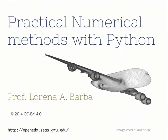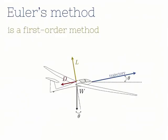Welcome to Practical Numerical Methods with Python and our first screencast, where we cover a little bit of theory to go along with the practical part in the IPython notebooks. In this first screencast we're going to discuss Euler's method. Euler's method is a first-order method, and in lesson 2 of the course module on the Phugoid model of Glider Flight we introduced Euler's method.